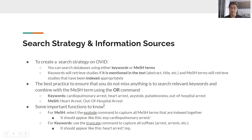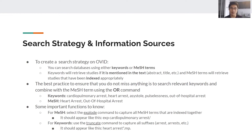For MeSH terms, you should select the 'explode' command, which captures all MeSH terms indexed below that particular term. For example, writing 'exp cardiopulmonary arrest' will capture all the relevant index terms under that heading, including more specific sub-terms. For keywords, you can use a wildcard asterisk to capture suffixes — for example, 'heart arrest*' will capture 'arrests' or other variations, so you don't miss studies that add an S or use other word forms. These are useful tricks to know.